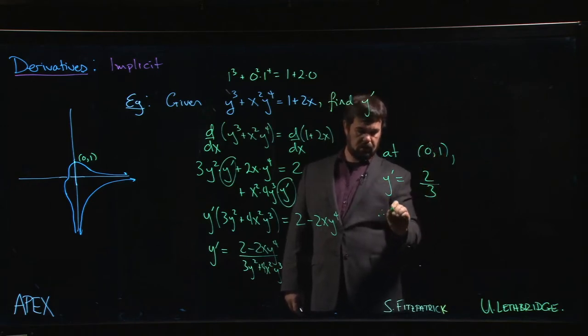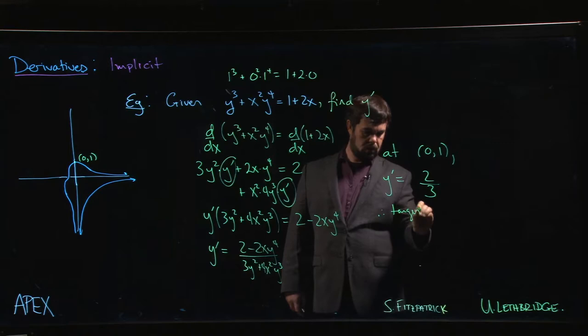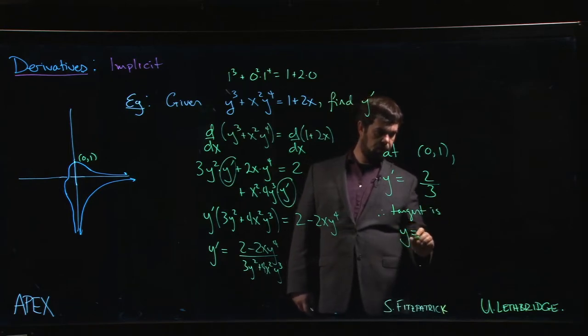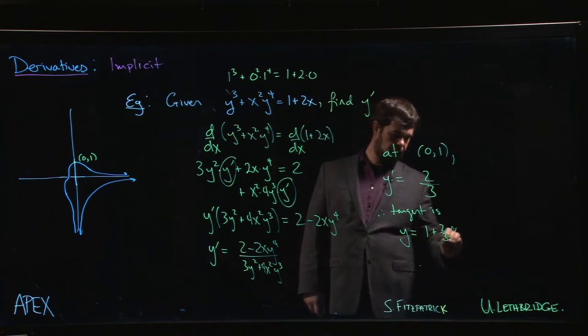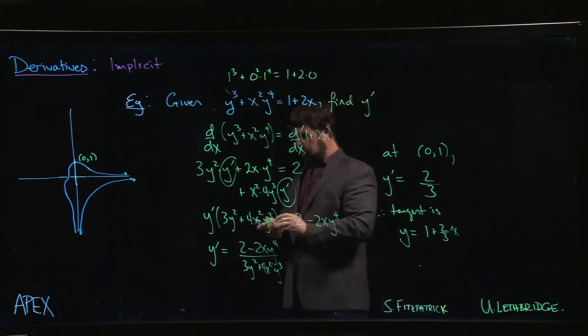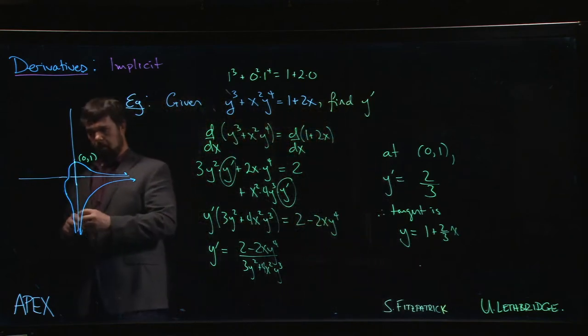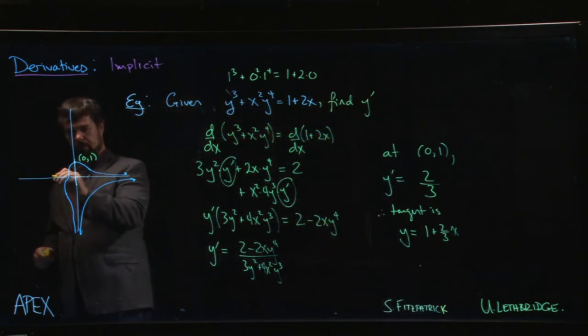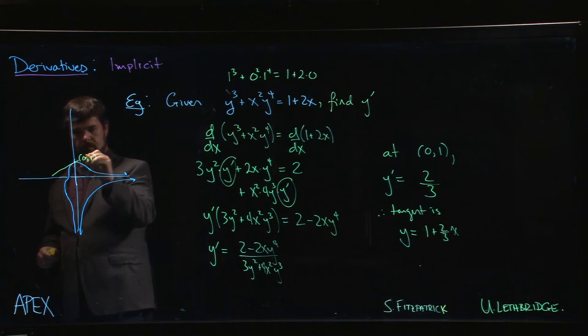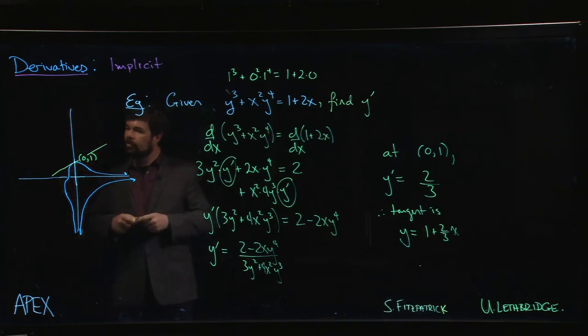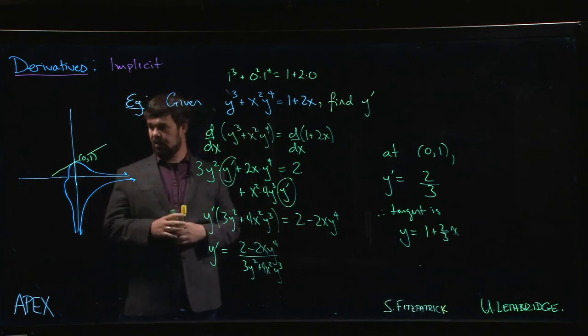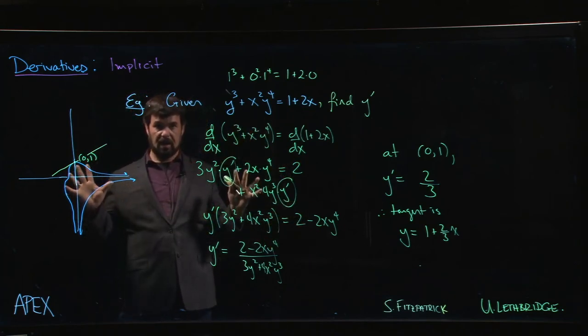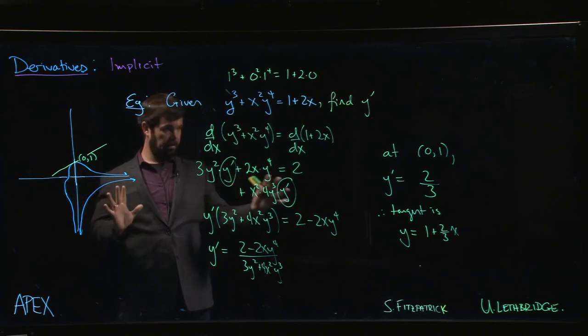And so the tangent line is going to be y equals 1 plus 2 thirds times x. And that gives us the tangent line passing through that point. And again, if you graph both this line and the curve using software, you'll find that you do indeed have a good tangent line here using this method.